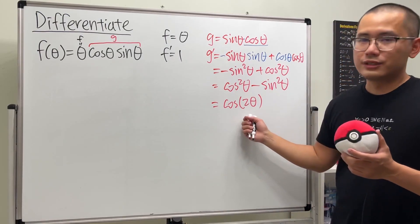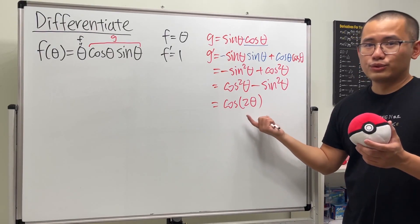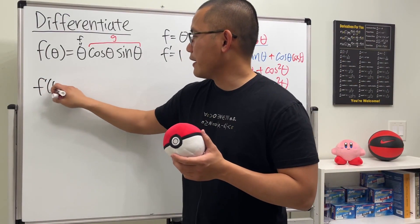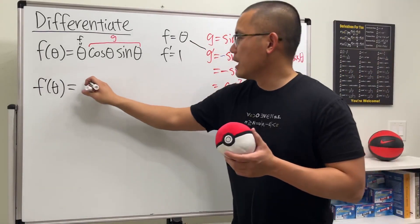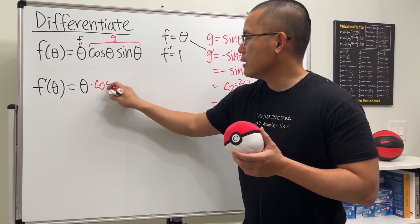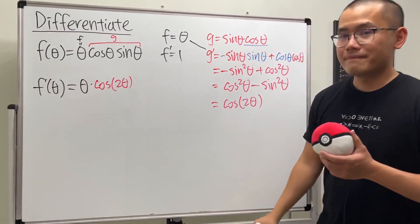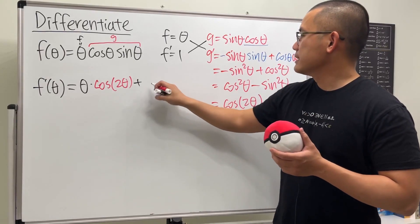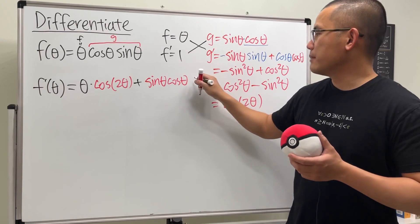Using that identity will make the answer shorter. So let's write down f prime of theta. We do f times g prime, which gives theta times cosine of 2 theta, and then we add g times f prime, which is sine theta cosine theta times one.